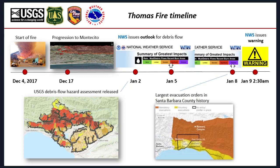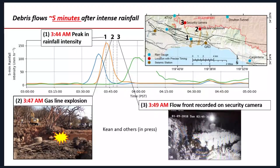On January 9th, the National Weather Service issued a debris flow warning at about 2:30 in the morning based on radar and weather models. About an hour and fifteen minutes later, debris flows impacted the community of Montecito. We have very good information on the timing from gas line explosions and security camera footage. The key takeaway is that peak rainfall intensity occurred only a few minutes before the debris flows, reinforcing the importance of issuing warnings effectively.